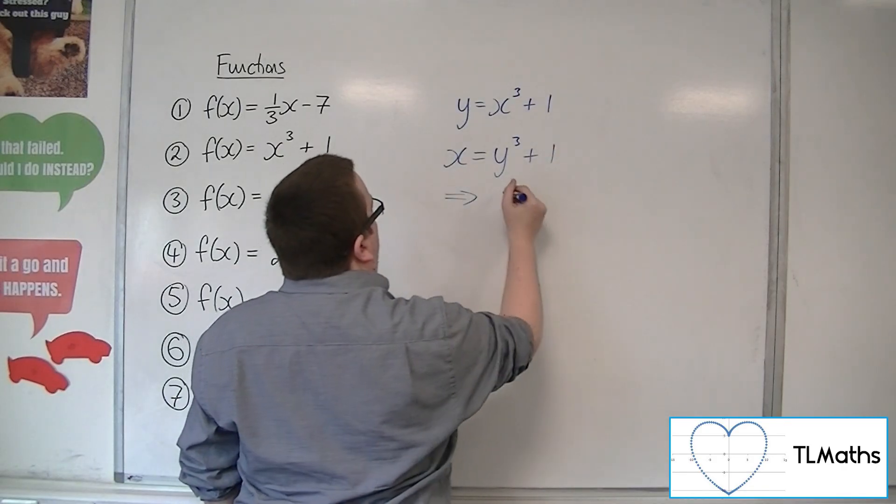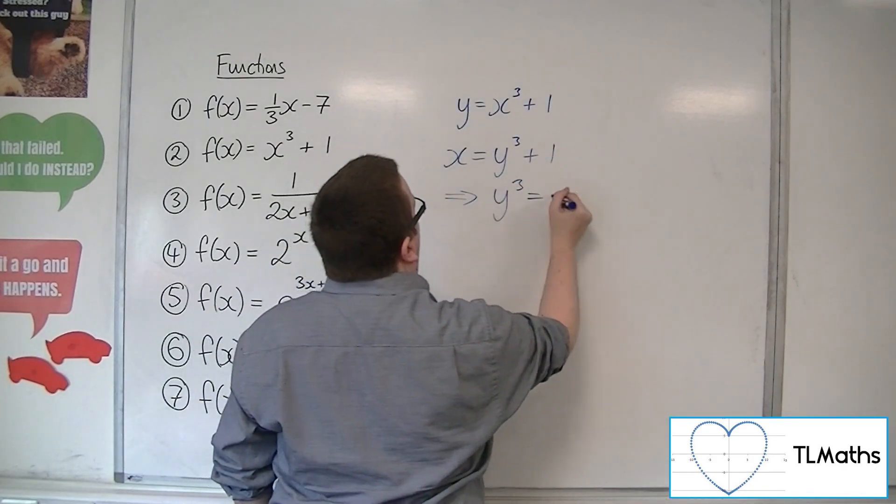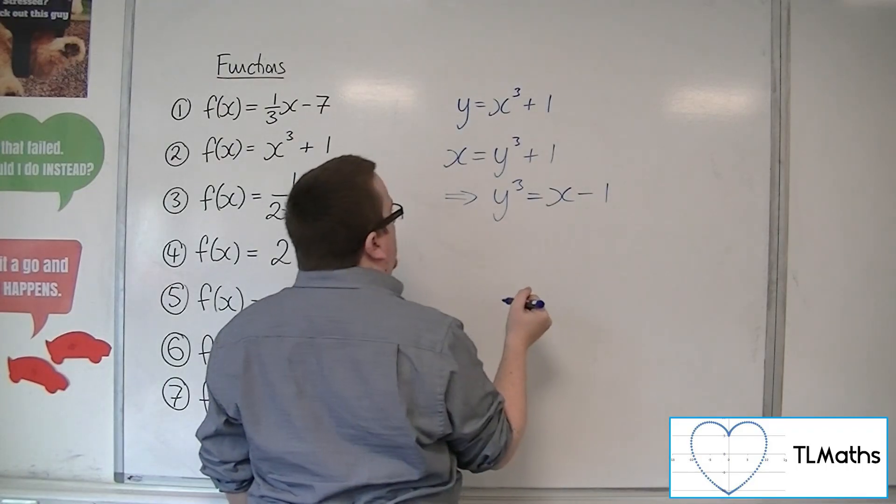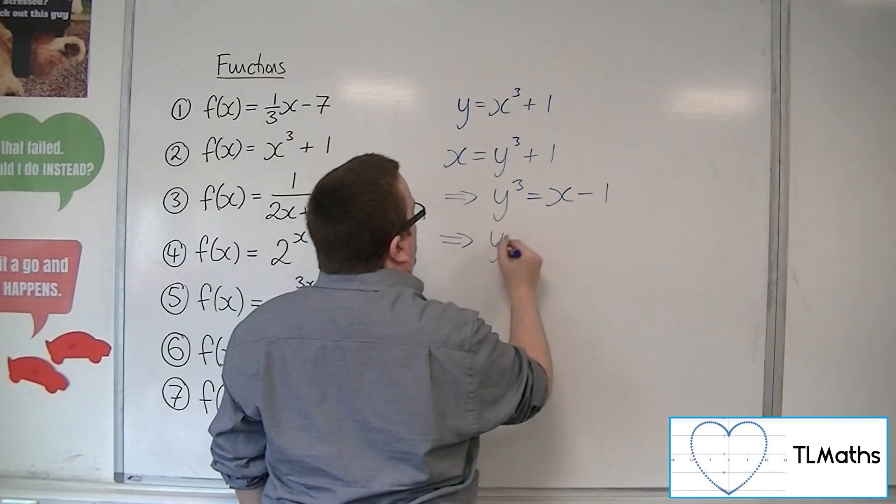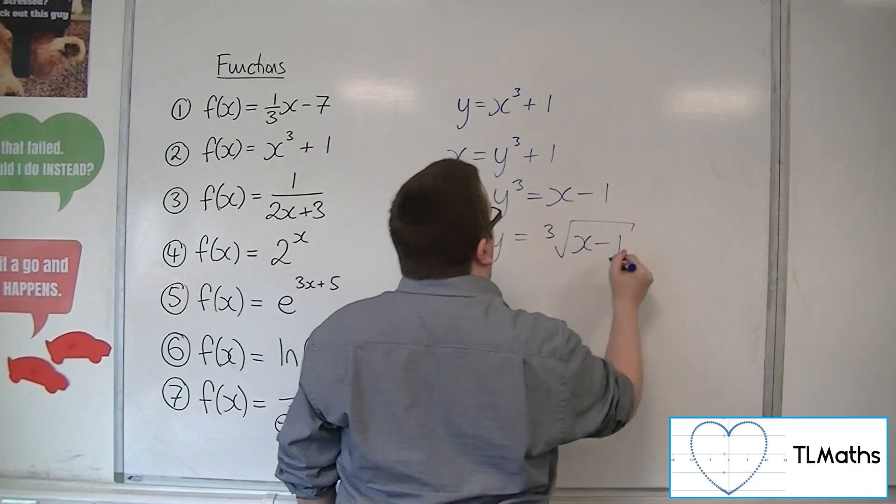Then rearrange it. So y³ is going to be x - 1, and so y would be the cube root of x - 1.